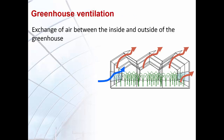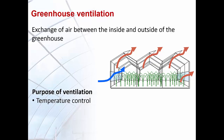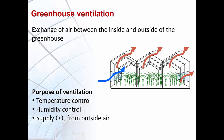Greenhouse ventilation is an exchange process of air between the inside and outside of the greenhouse system. The purpose of ventilation is to control temperature and humidity in the greenhouse system, to supply carbon dioxide from outside air, and to reduce thermal stress on workers.